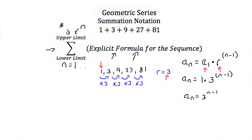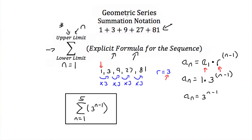The summation of this example series would be written with an upper limit of 5 (since there are 5 terms), starting from n equals 1, with the formula 3 to the (n minus 1) power at the end. This is the geometric series 1, 3, 9, 27, 81 written in summation notation.